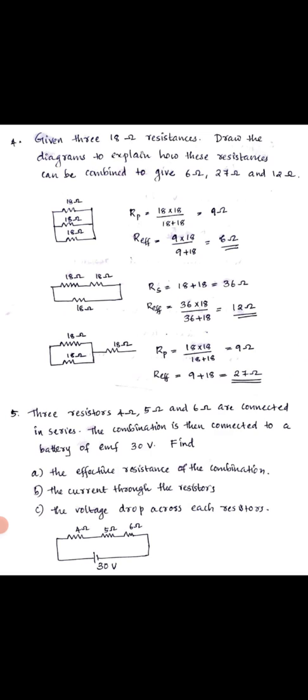Third question: Three resistors — 4 ohm, 5 ohm, and 6 ohm — are connected in series. The combination is then connected to a battery with EMF of 30 volts. Find: the effective resistance of the combination, the current through the resistors, and the voltage drop across each resistor.